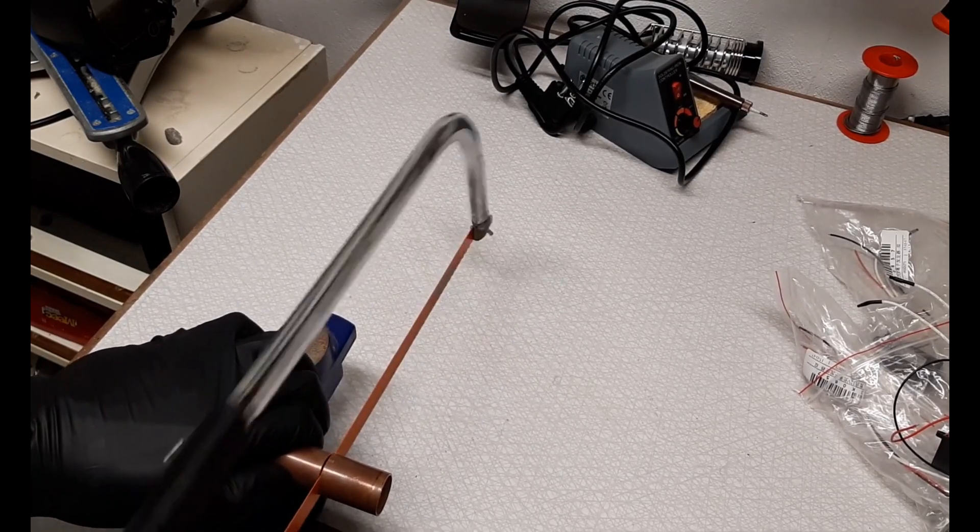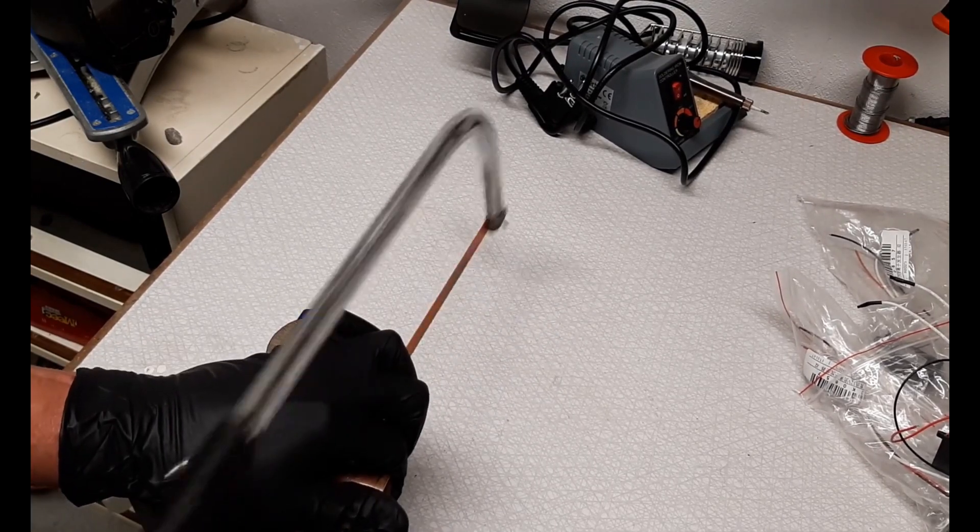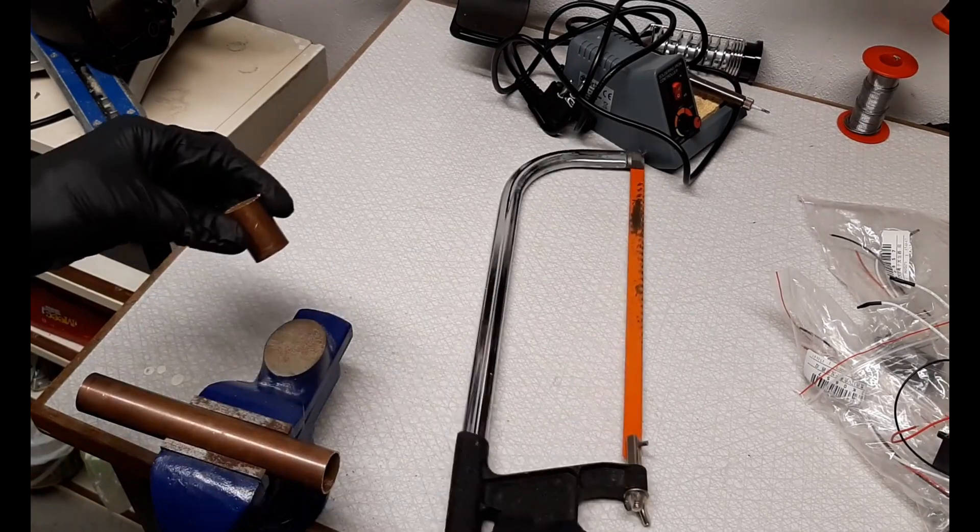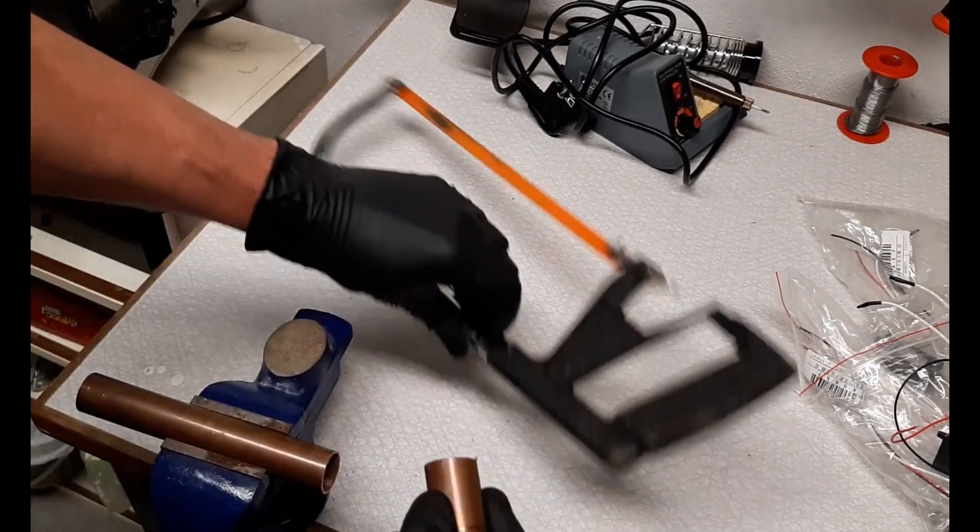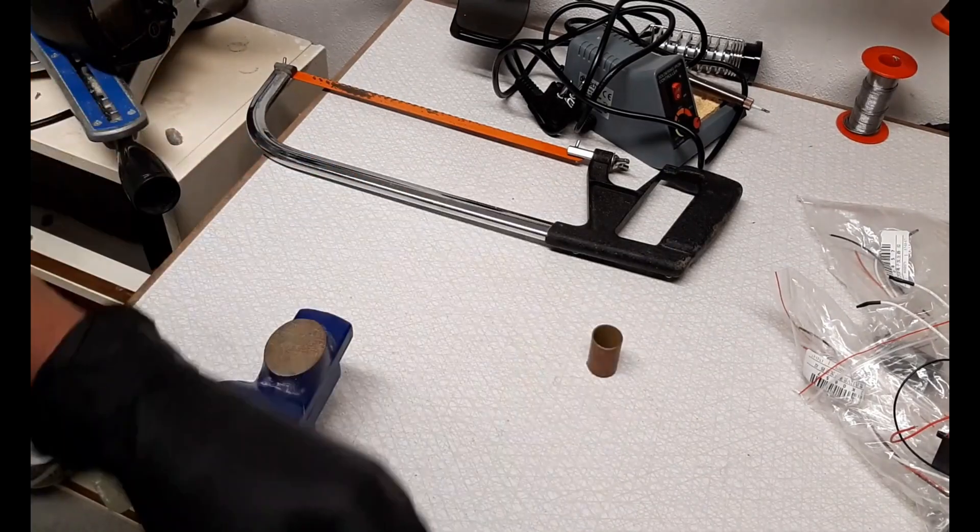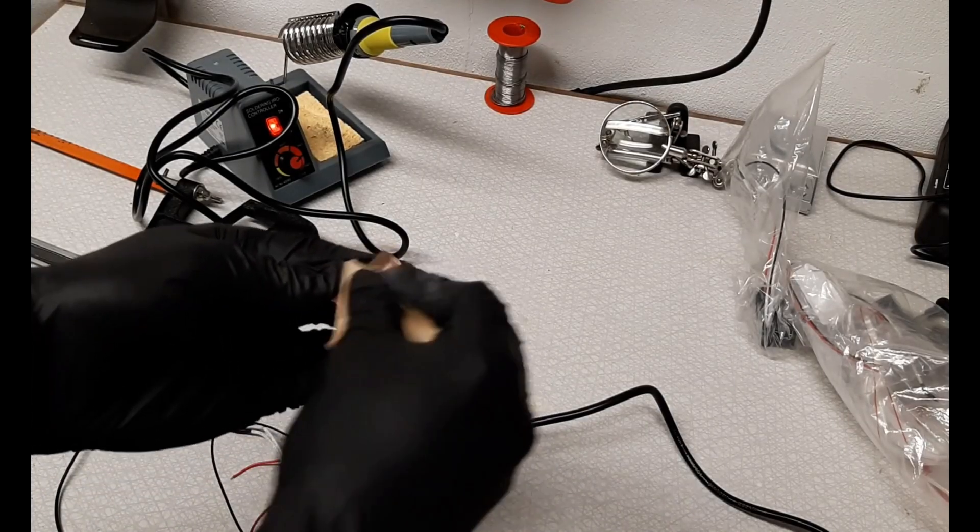I started off by cutting a piece of copper pipe. I sandpapered the copper pipe and I also drilled a hole in the copper pipe to make the solder stick better to it.